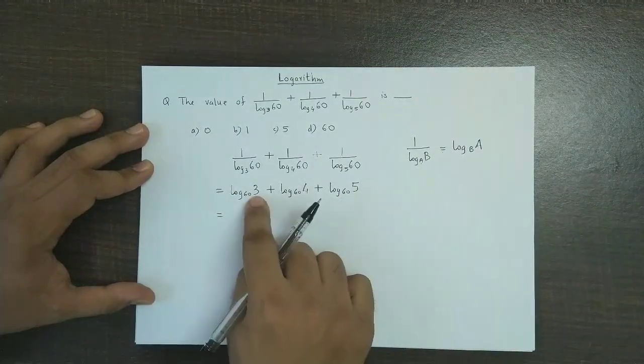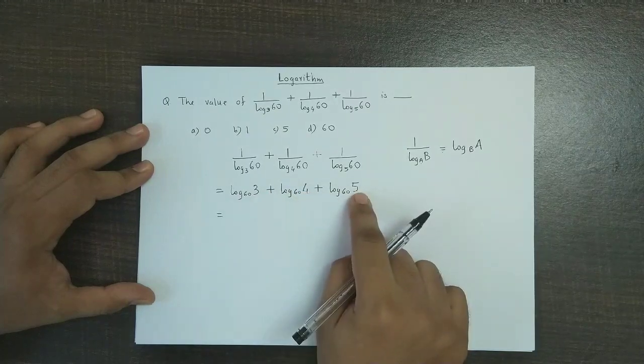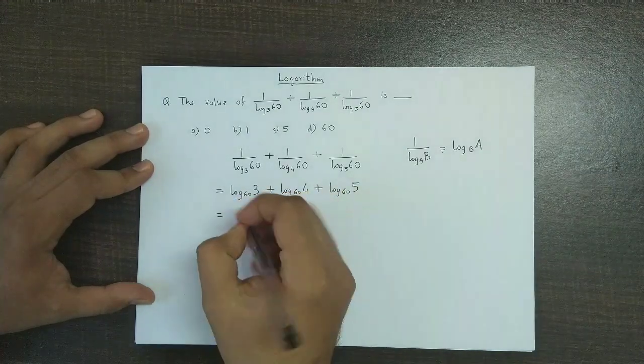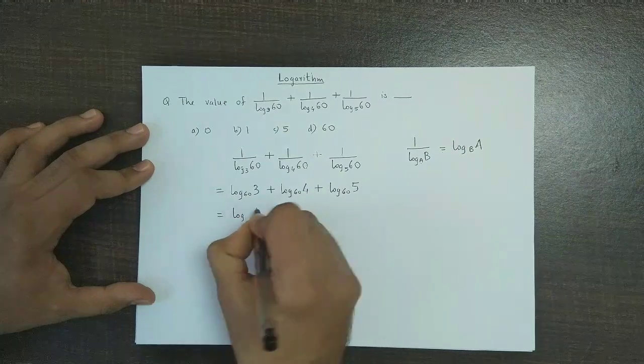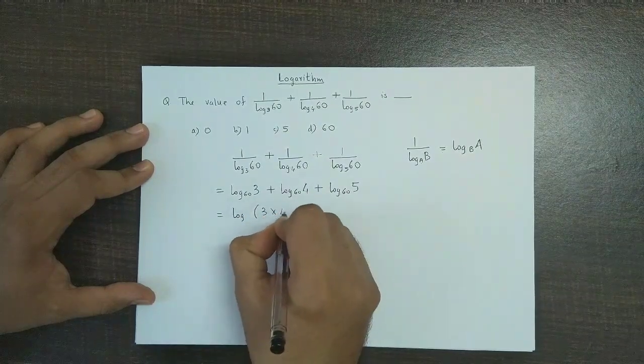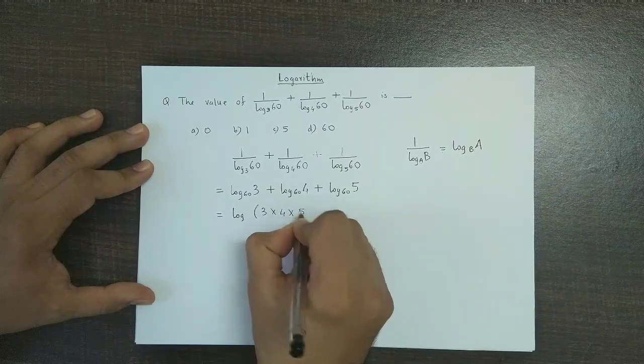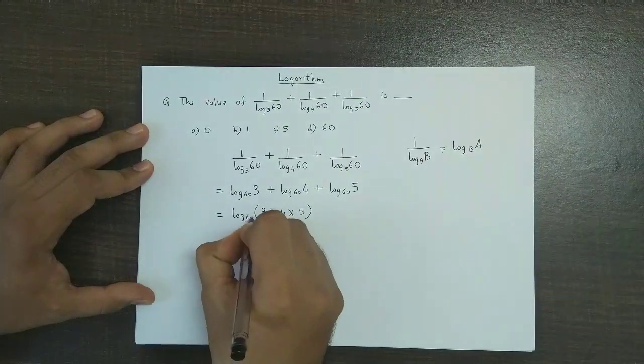And now we have log A plus log B plus log C, right? So this could be combined together as log of 3 into 4 into 5 to the base 60.